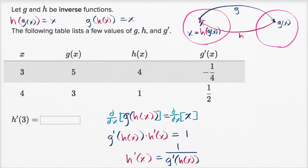But we can use this now if we want to figure out what h prime of three is. Because h prime of three is going to be equal to one over g prime of h of three, which I'm guessing that they have given us. So h of three, when x is three, h is four. So that is h of three there.